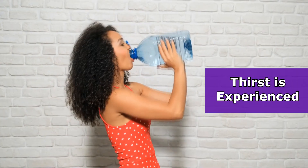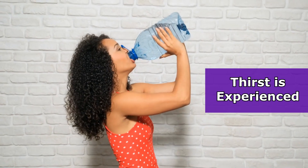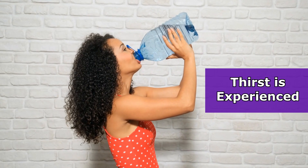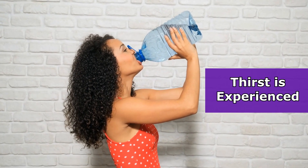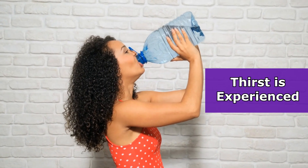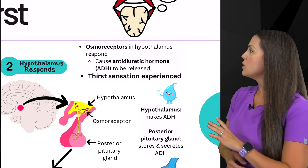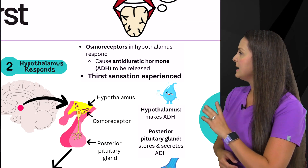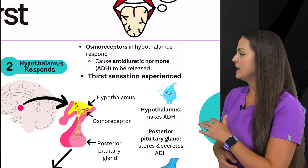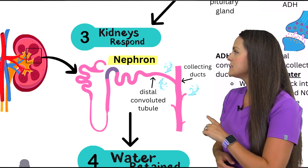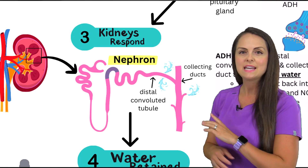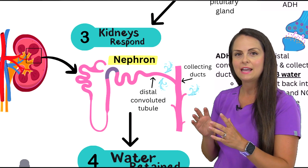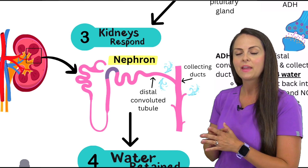This is when the thirst sensation is going to be experienced, so the person is going to have this desire to drink fluid. Once ADH is secreted, it's going to cause the kidneys to respond — they sense the ADH.